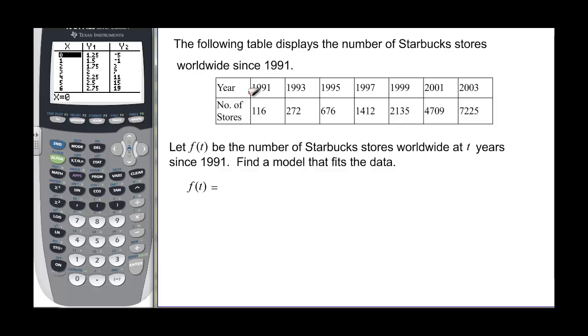The following displays the number of Starbucks stores worldwide since 1991. And it's going to be important that since 1991. That means that in 1991, 0 years have gone by. In 1993, 2 years have gone by. 95 would be 4 years. And 97, 6, 98, or 99 would be 8. 2001 would be 10. 2003 would be 12. So those are my L1s. And the number of stores here would be my L2. So I've already put that in my calculator.